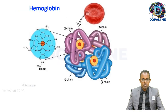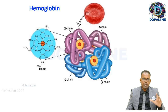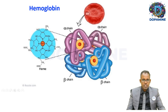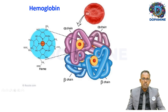Heme is present in hemoglobin. Hemoglobin is made up of four globin chains — alpha 1, alpha 2, beta 1, beta 2 — and heme is present in each of the globin chains. There are four heme molecules in one hemoglobin molecule. Heme is a tetrapyrrole ring with iron at the center.